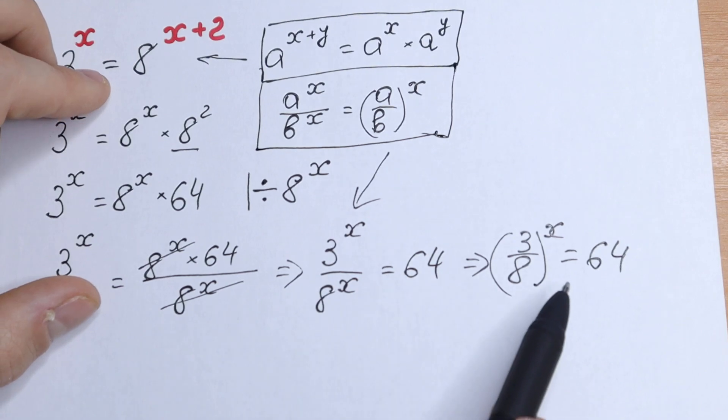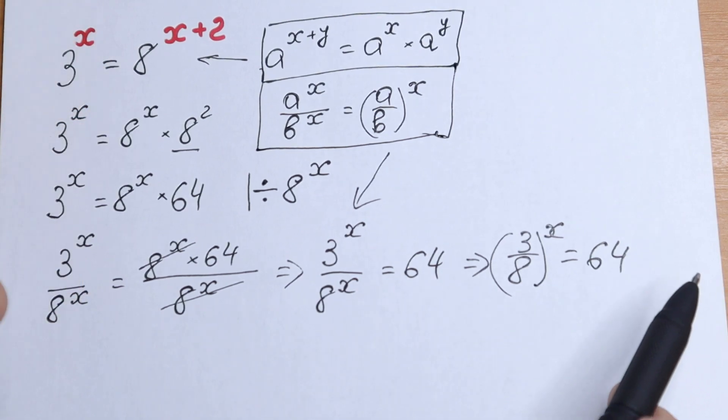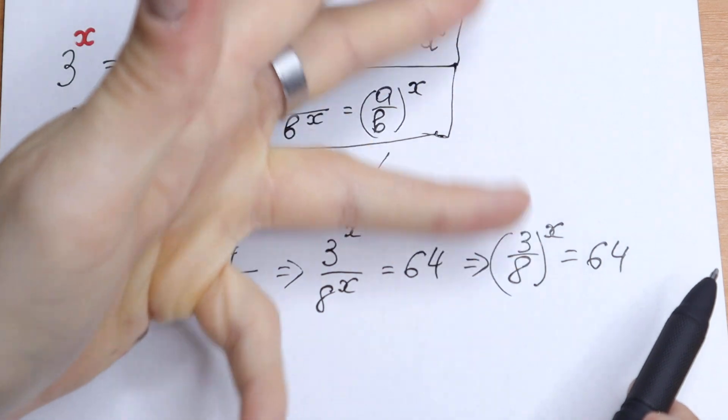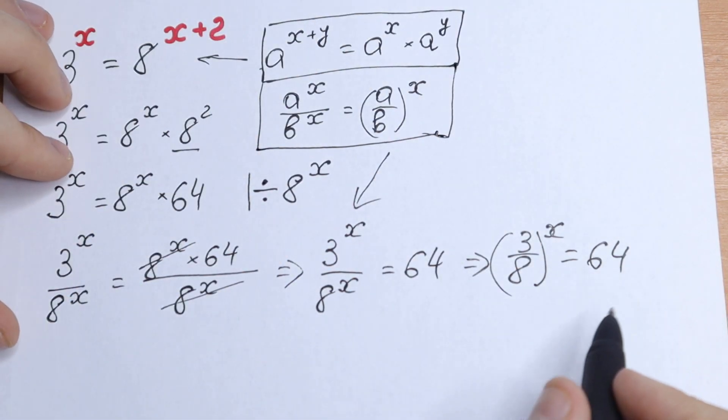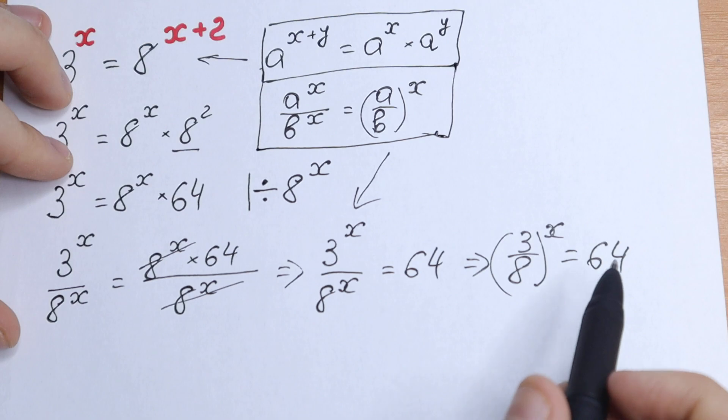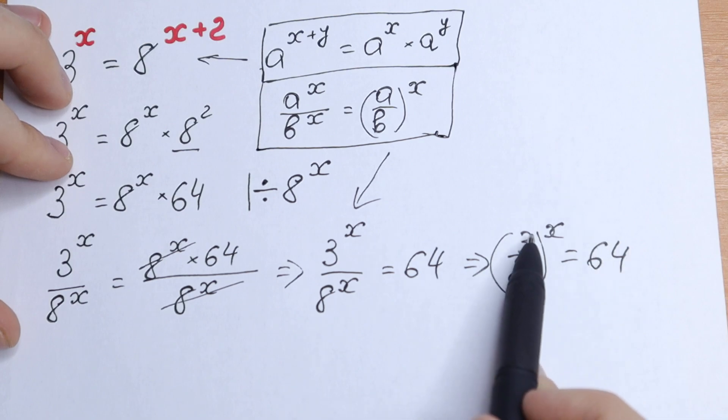So what are we going to do next? Take a look, this looks like a log, because from here we have a fraction, but it doesn't matter. It looks like a log. We take a log from both sides. But what a base. Let's take a log base of 3 over 8.